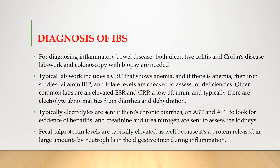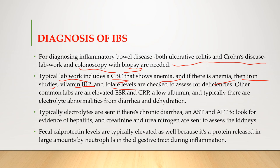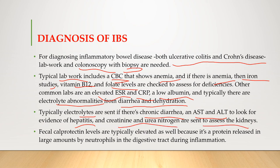For diagnosis of inflammatory bowel diseases, both ulcerative colitis and Crohn's disease can be diagnosed with colonoscopy with biopsy. Lab work includes complete blood count showing anemia requiring iron studies, vitamin B12 and folate levels, elevated ESR and CRP, low albumin, and electrolyte abnormalities from diarrhea and dehydration. AST and ALT are checked for hepatitis, creatinine and urea nitrogen for kidney function, and fecal calprotectin levels are typically elevated as it is a protein released by neutrophils during digestive tract inflammation.